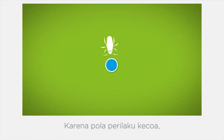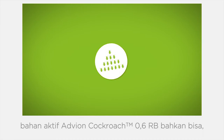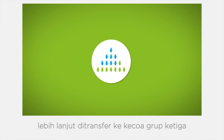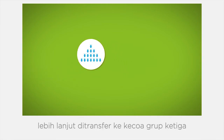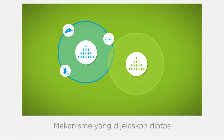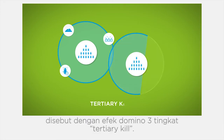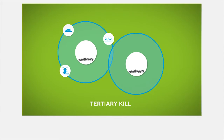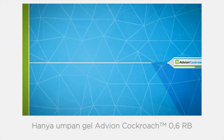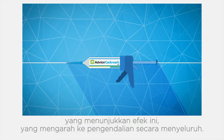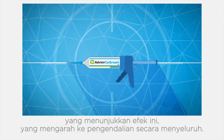Due to the behaviour patterns of cockroaches, Adveon cockroach gel bait can even be further transferred to a third group of roaches by the same mechanism, which is then called tertiary kill. Only Adveon cockroach gel bait has demonstrated this effect, leading to more thorough control.